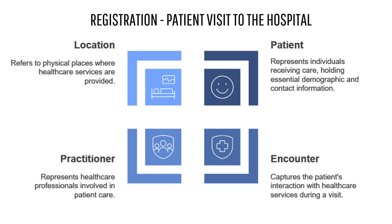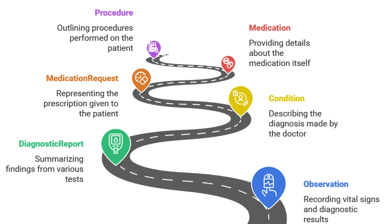FHIR uses something called a practitioner resource, which can represent any healthcare professional involved in your care — in this case, the nurse — including information like their name and credentials. And all those vital signs are recorded as observation resources, so each measurement is an observation that anyone who needs to see your latest vitals can easily access. It's all connected thanks to FHIR.